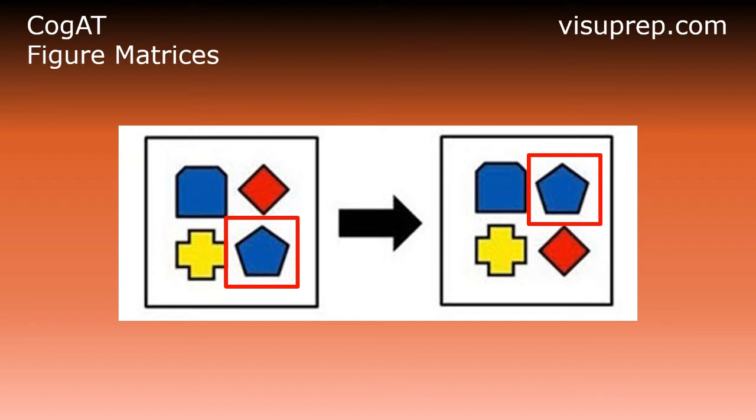To find the answer, we need to apply the same relationship to the first box of the bottom row.